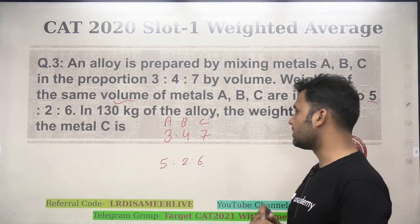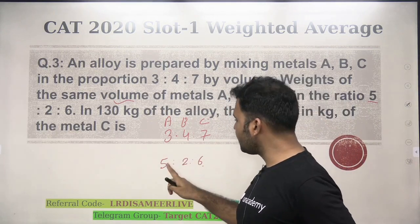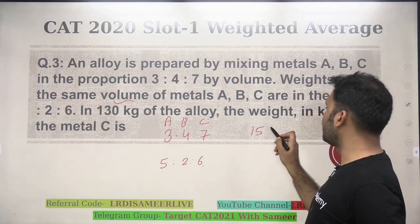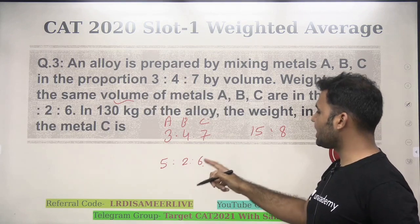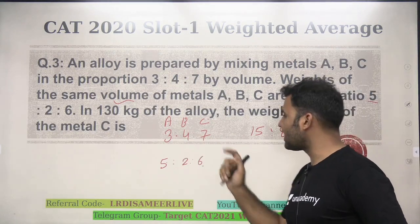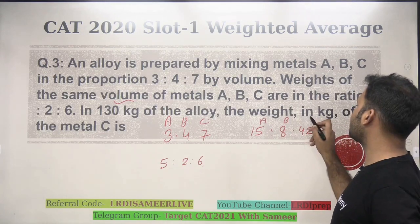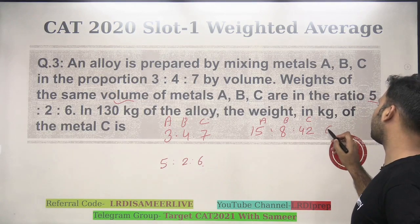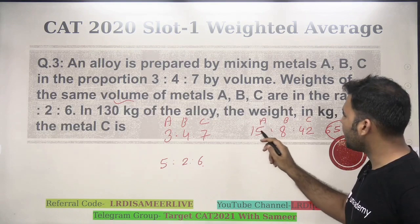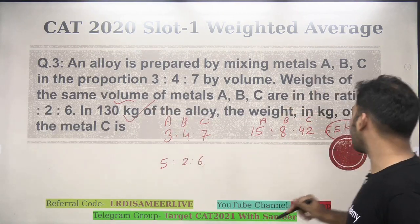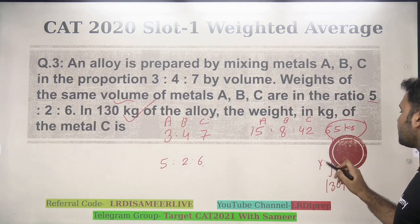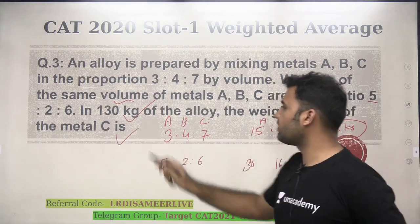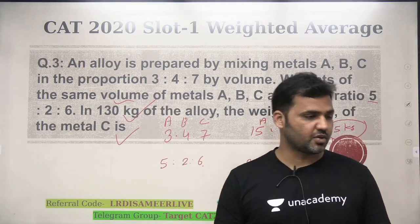If you mix in proportions 3:4:7 — 3 units of A weigh 15 kg, 4 units of B weigh 8 kg, and 7 units of C weigh 42 kg. Total weight is 15 + 8 + 42 = 65 kg. The actual alloy weighs 130 kg, which is 2 times 65. So metal C's weight is 42 × 2 = 84 kg. The answer is 84 kg.